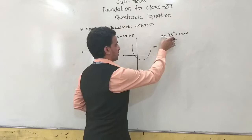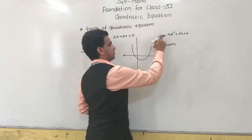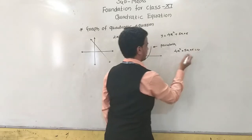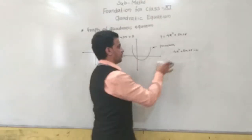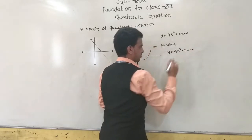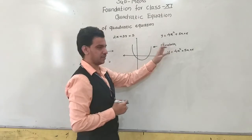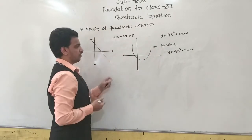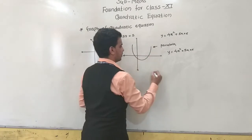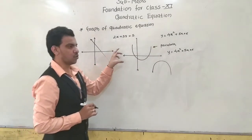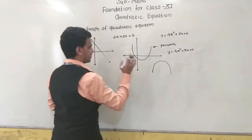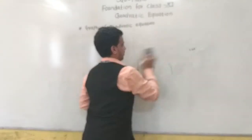The graph of a quadratic equation is a parabola. We cannot say '4x² + 5x + 6 = 0' has a graph — we must write y = 4x² + 5x + 6. The parabola can open either upward or downward, and this depends on the coefficient of x².